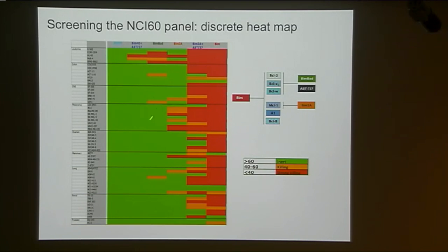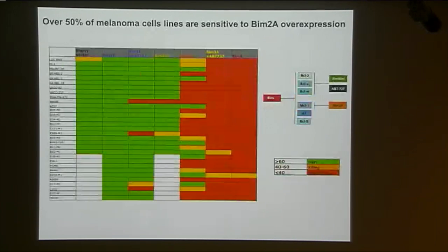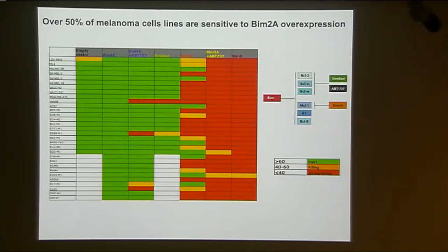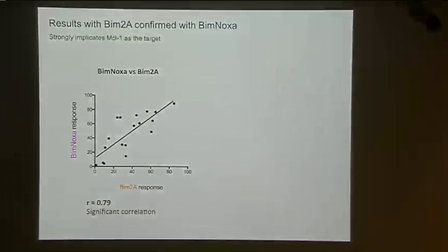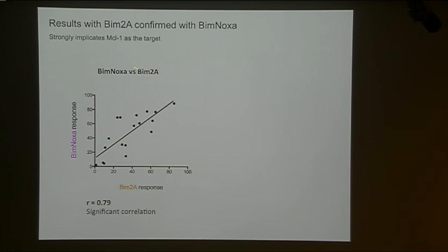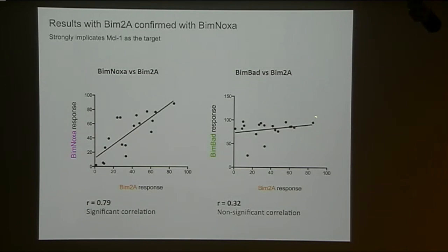What took our attention was that with BIM2A, which is an MCL1-selective ligand, there seemed to be a greater proportion of melanoma cell lines sensitive to BIM2A overexpression — and that was a surprise to us. In collaboration with Grant McArthur at Peter Mac and his colleagues, we looked at a much larger panel of about 40 melanoma cell lines. Over 50% of melanoma cell lines available seem to be sensitive to BIM2A overexpression. We confirmed results using a BIM variant whose BH3-only domain of NOXA is also MCL1-selective, getting a very good correlation, whereas BIM-BAD with different specificity showed no correlation. That strongly implicates MCL1 as the target in these cells.